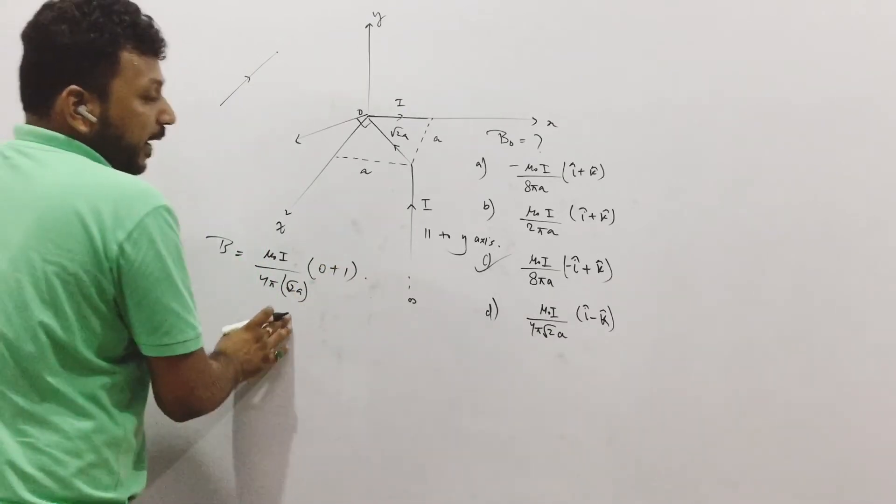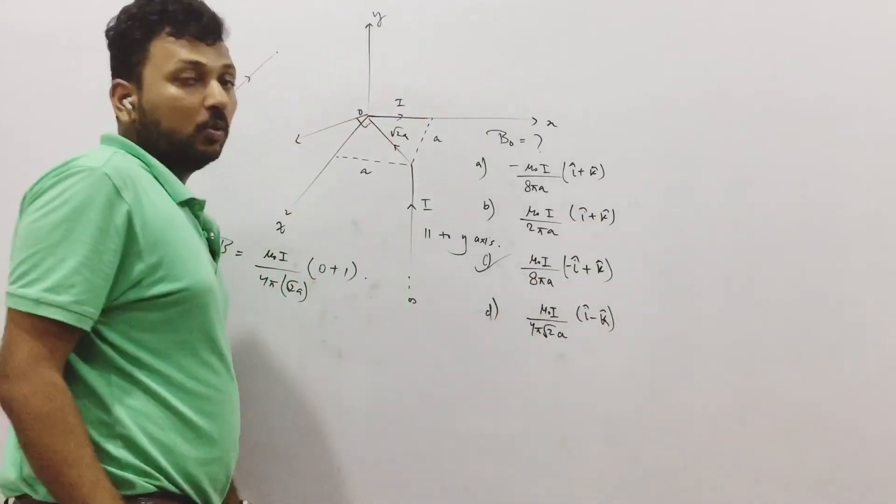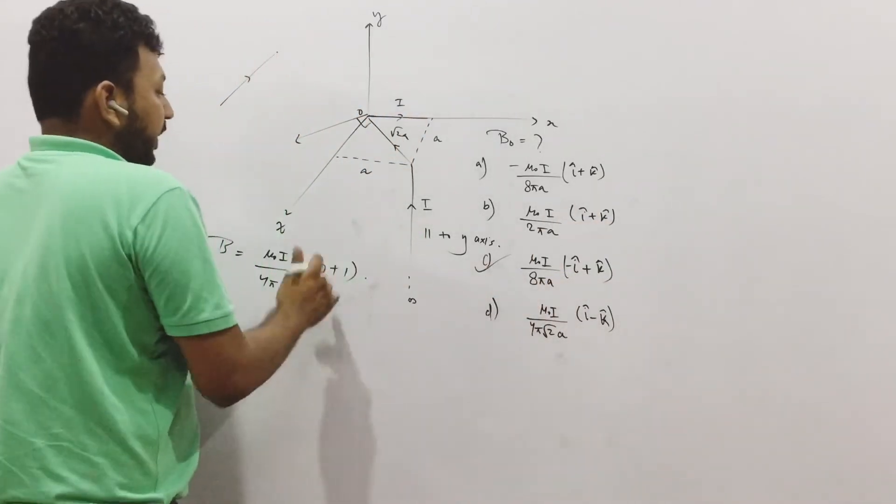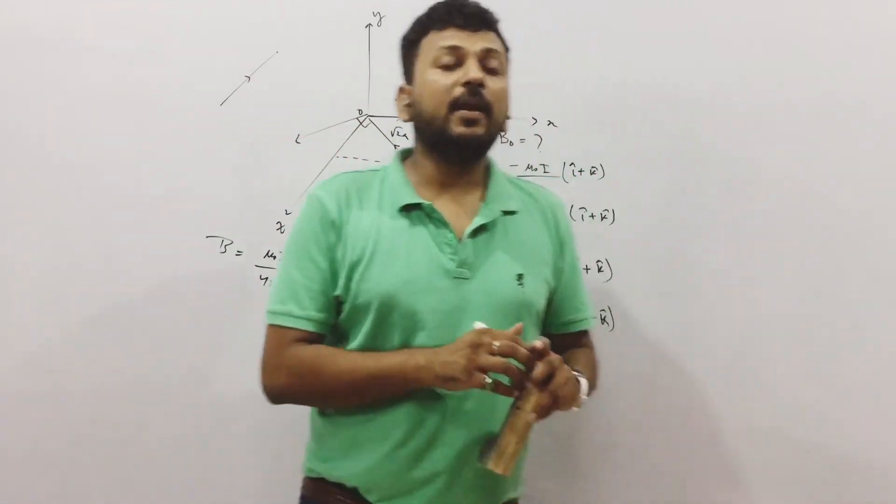So this should be the magnitude and the magnitude is also matching here. The magnitude of minus i plus k is √2. So if you cancel √2, this only remains. So by magnitude and direction, you have only one option that is correct.